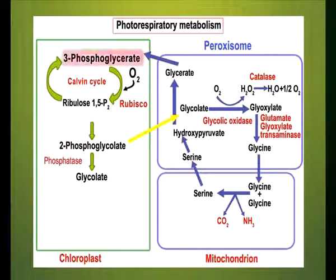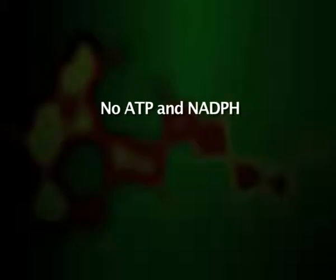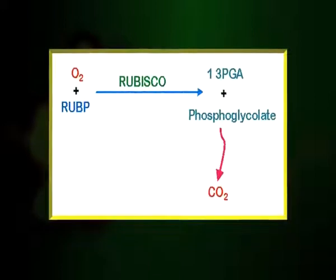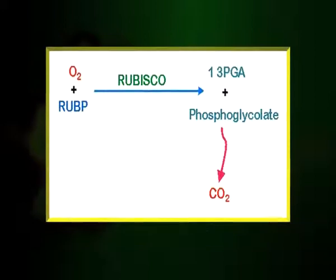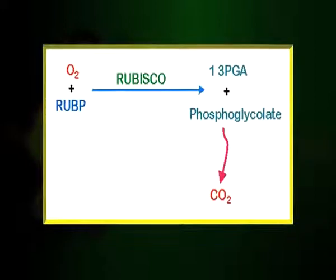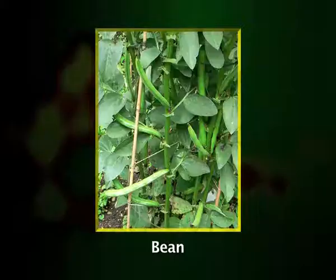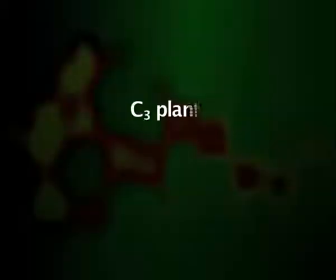The process of photorespiration interferes with the successful functioning of the Calvin cycle, and in this process no ATP or NADPH are generated. This process is harmful to plants because as much as half the photosynthetically fixed carbon dioxide in the form of RuBP is lost into the atmosphere, thereby decreasing the photosynthetic efficiency of plants. Photorespiration has been found to occur in temperate plants like rice, bean, wheat, barley, and so on, and these plants are known as C3 plants.